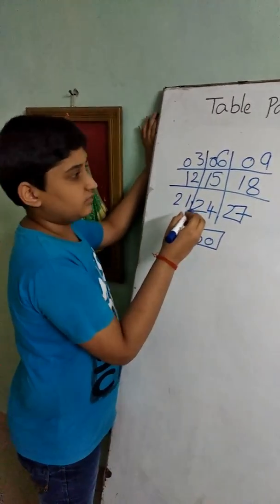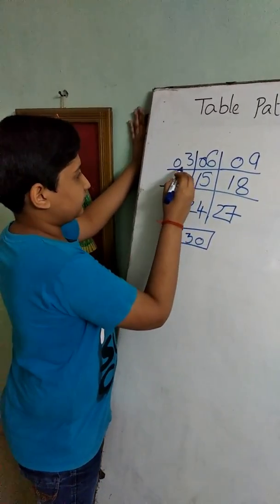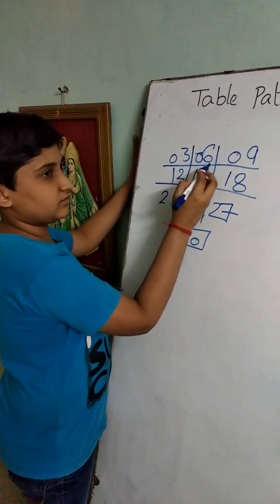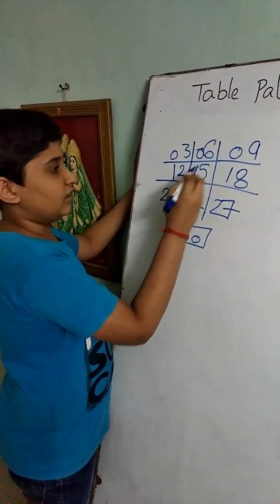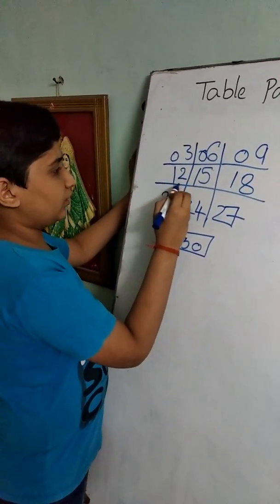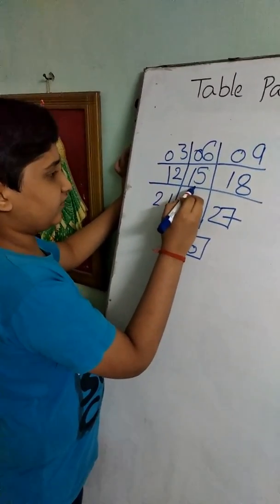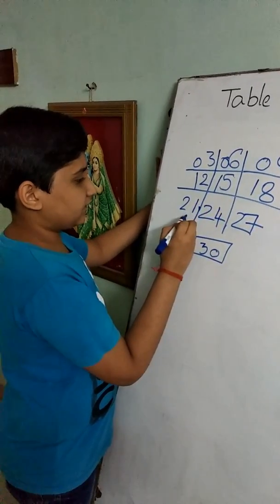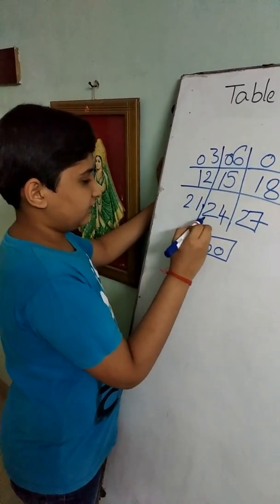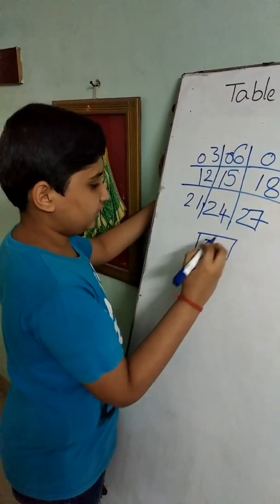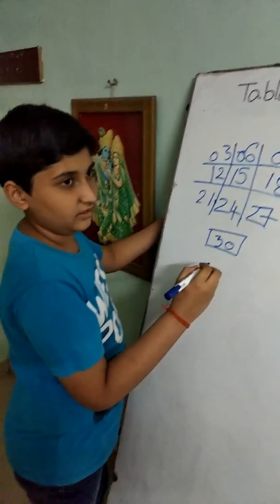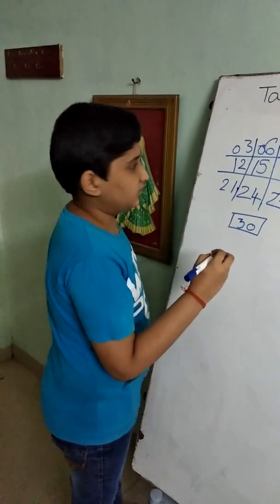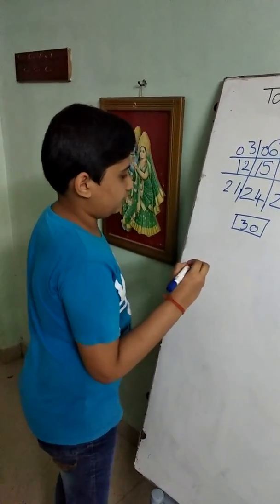This is the third table: 3 ones are 3, 3 twos are 6, 3 threes are 9, 3 fours are 12, 3 fives are 15, 3 sixes are 18, 3 sevens are 21, 3 eights are 24, 3 nines are 27, 3 tens are 30. Now we will discuss the 6th table.